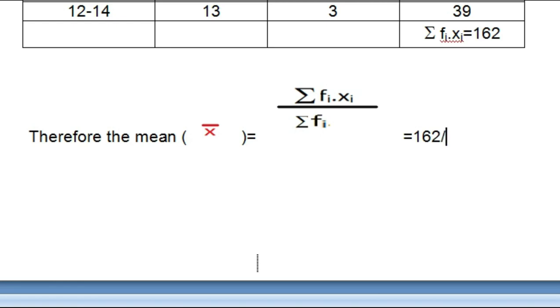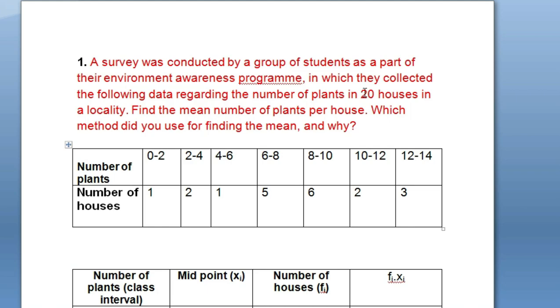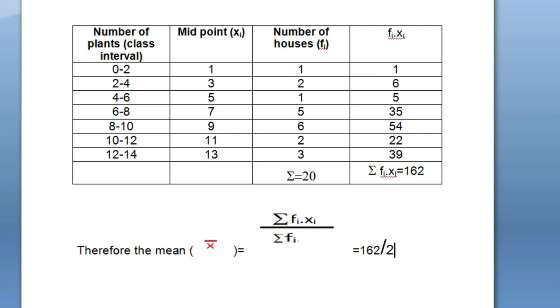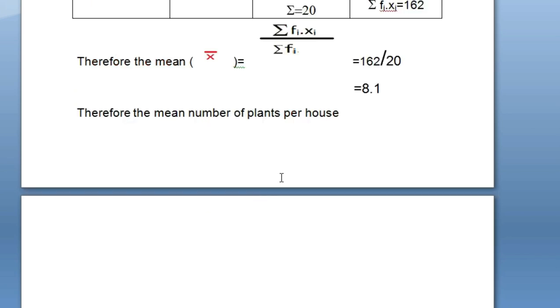x̄ equals 162 divided by, as it is given in the equation, the number of houses is 20, that means the total frequency is 20. So we'll divide it by 20; we'll get 8.1. Therefore, the number of plants per house is 8.1. Next is the assumed mean method.